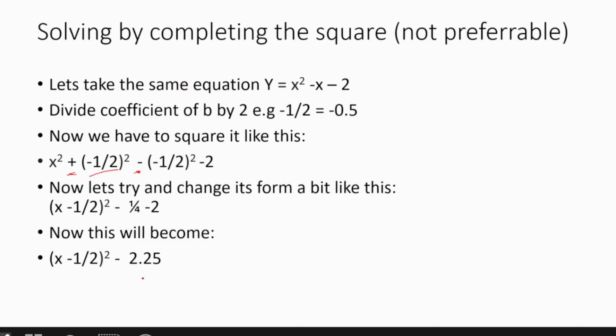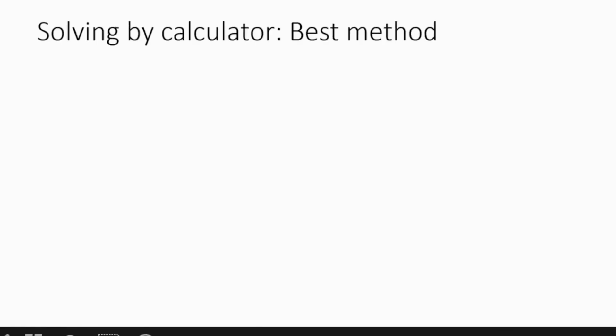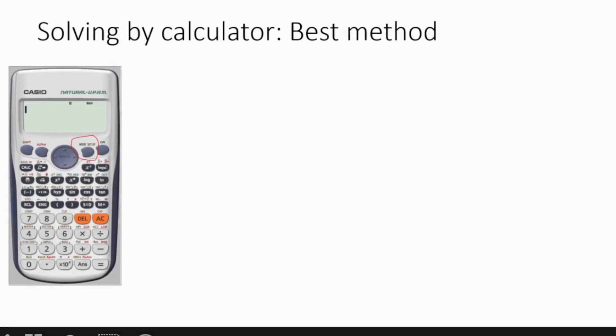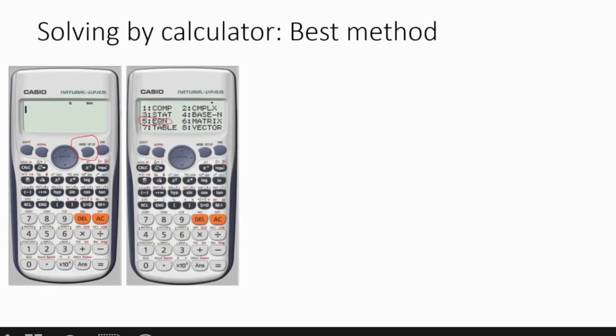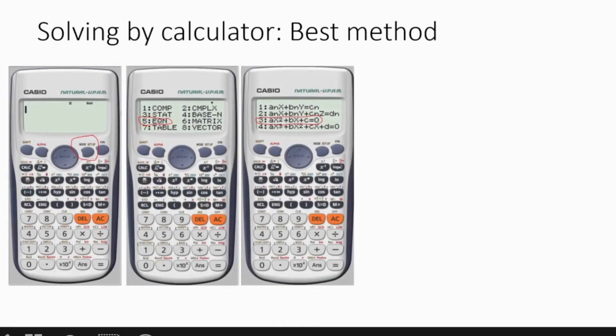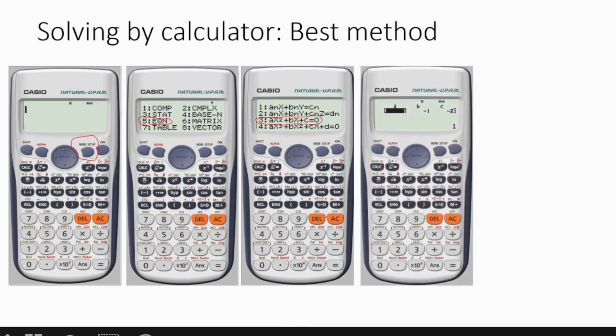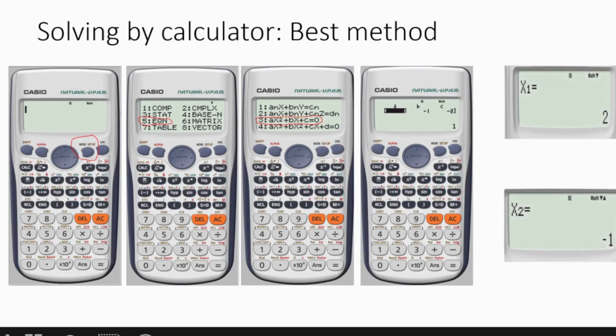Now let's move on to the best method — solving by calculator. First press Mode, then press 5 to go to Equation. Select 3 as we are solving a quadratic equation: ax² + bx + c = 0. Then enter the coefficients of the equation you are solving, and it will give you both x answers.